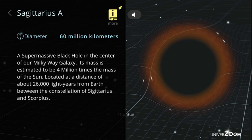Sagittarius A*, diameter: 60 million kilometers. A supermassive black hole in the centre of our Milky Way galaxy. Its mass is estimated to be 4 million times the mass of the sun. Located at a distance of about 26,000 light-years from Earth between the constellation of Sagittarius and Scorpius.